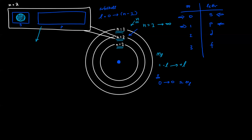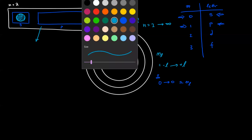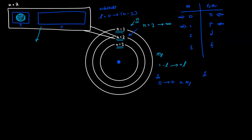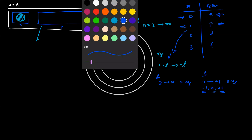The p orbital is a little more complicated. Since the p orbital has an l value of one, ml is going to range from negative one all the way to positive one. This leaves us with three values for ml: negative one, zero, and positive one, meaning there are three possible configurations for the p orbital in three-dimensional space.